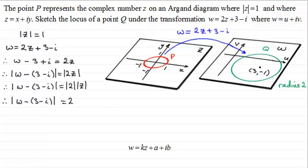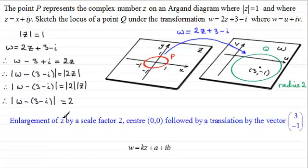So what we've got then is an enlargement of z by a scale factor of 2, centre the origin, followed by a translation by the vector 3 comma minus 1.